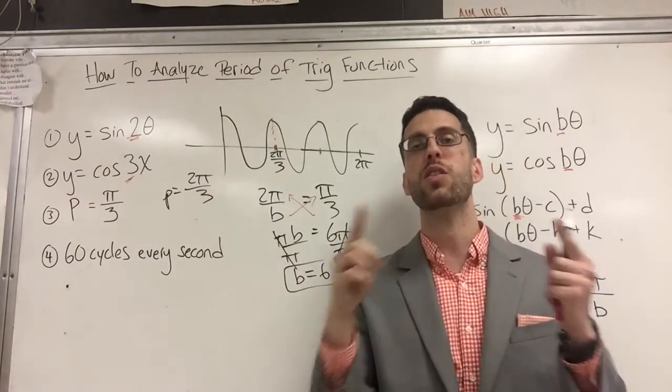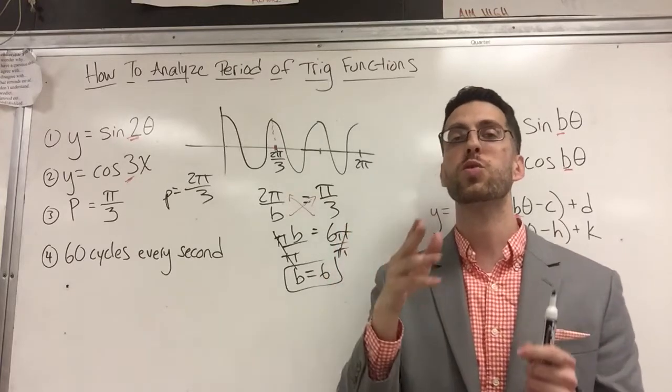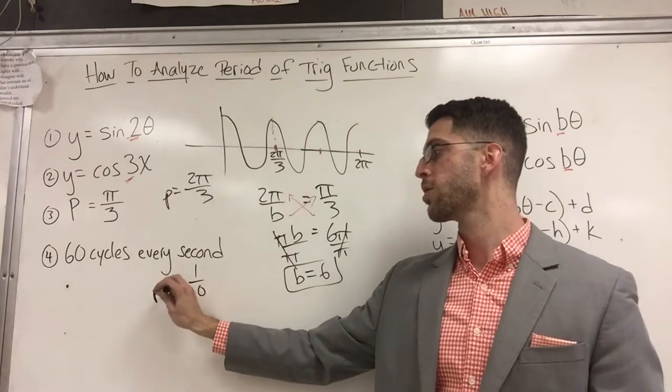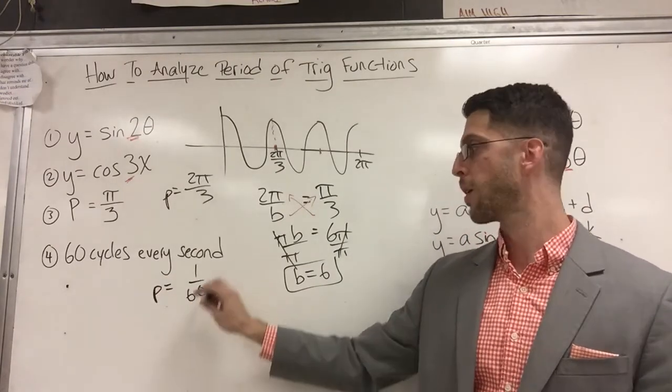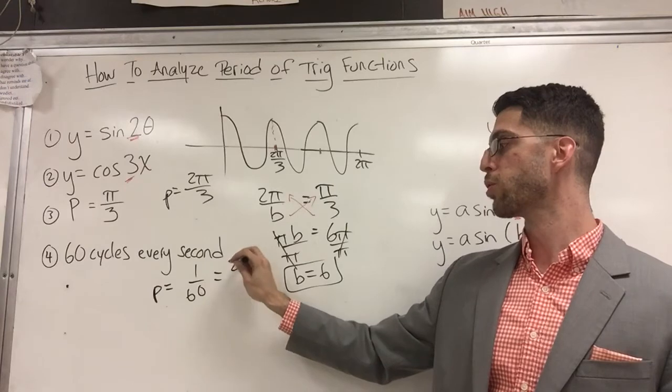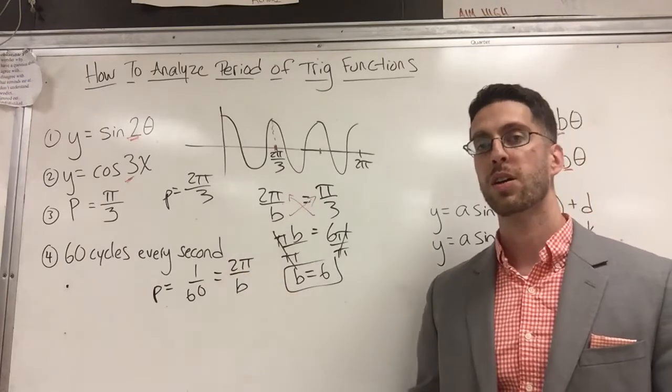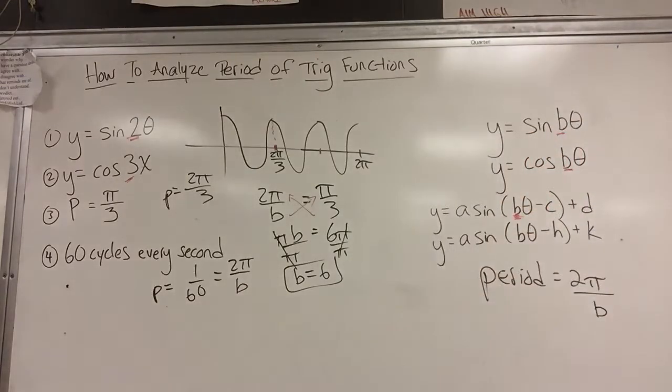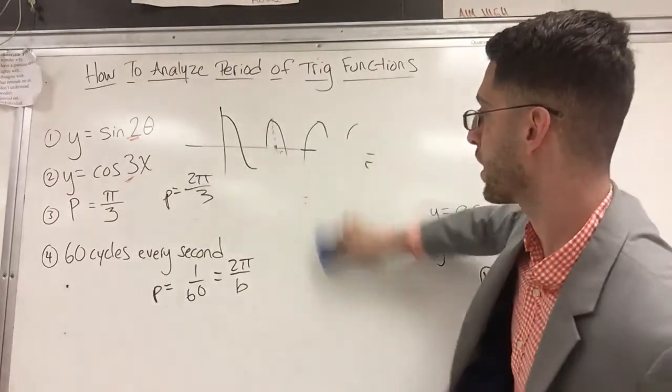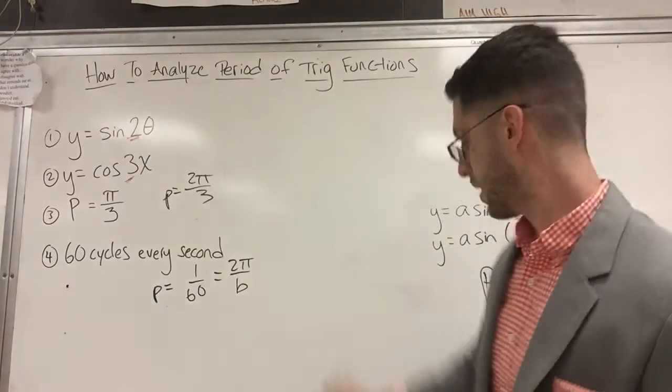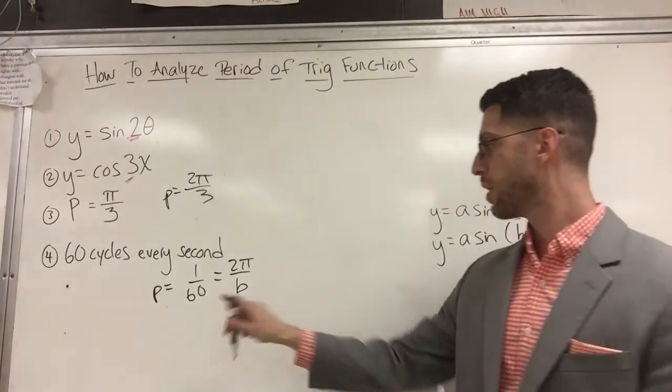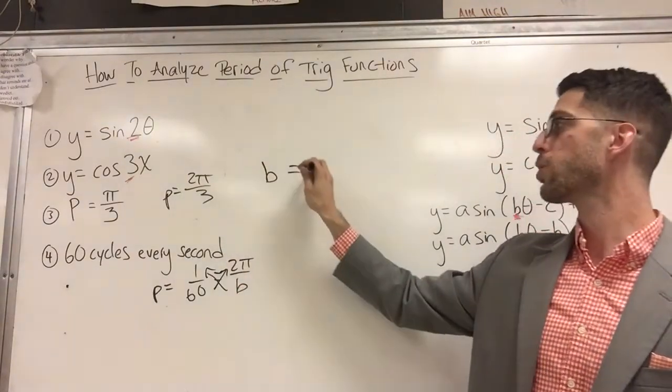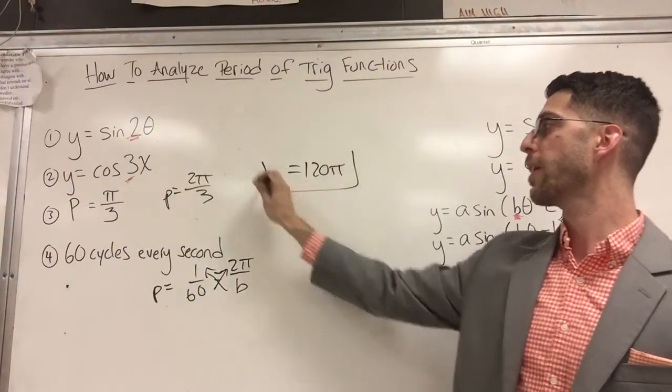But that's 60 curves. I need to worry about just one curve. So if I could fit 60 curves in a second, how long does it take for just one curve? It would take 1/60th of a second. So my period would be 1/60th of a second. But my period is also known as 2 pi over b, so can I determine b? I'm going to cross multiply and I'm going to get b times 1 is b, 60 times 2 is 120 pi.